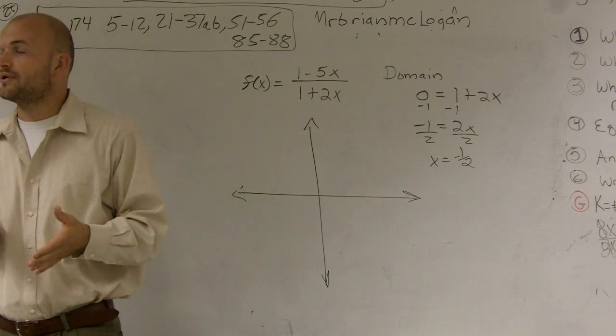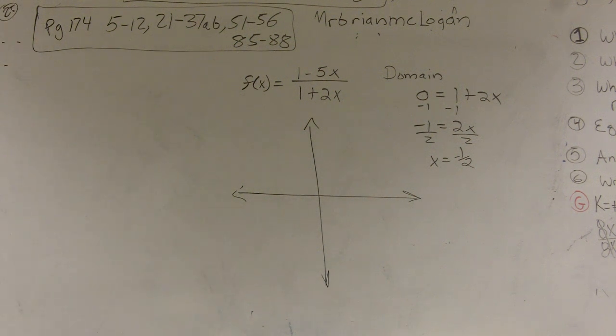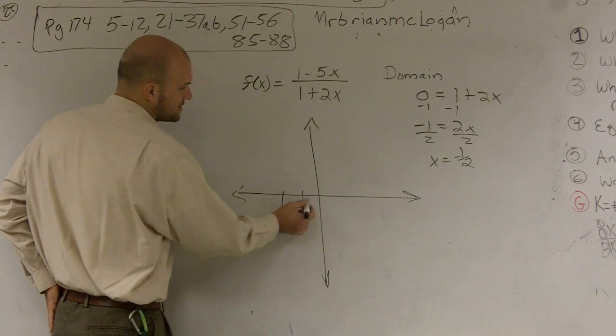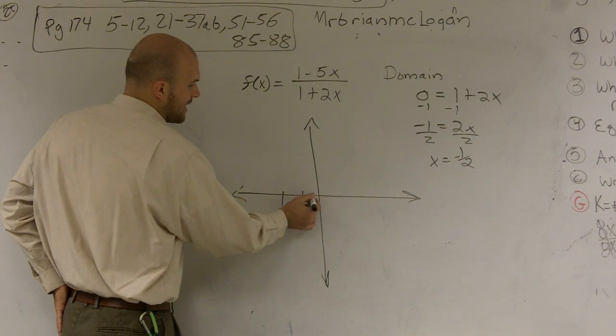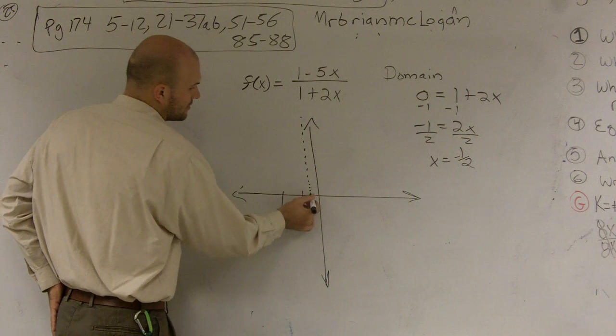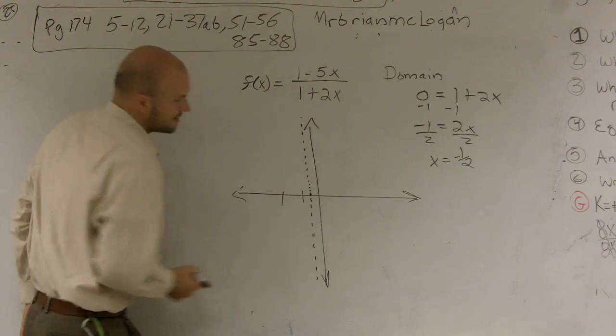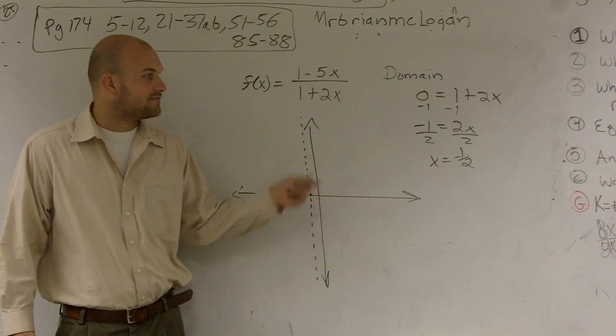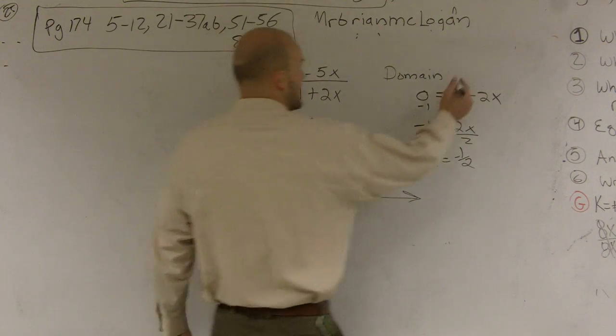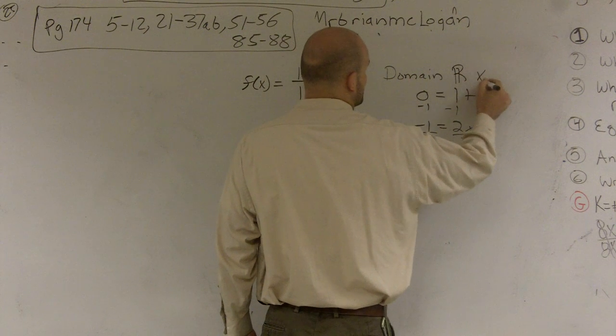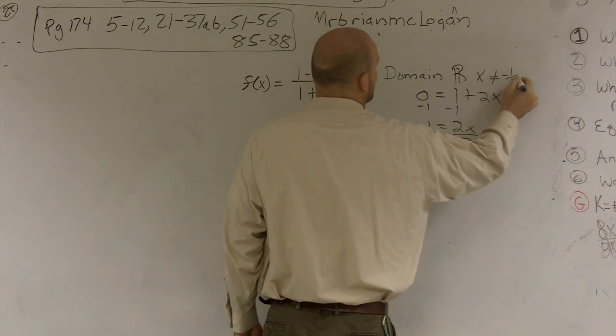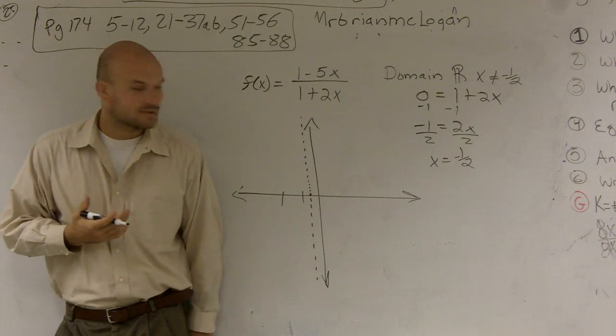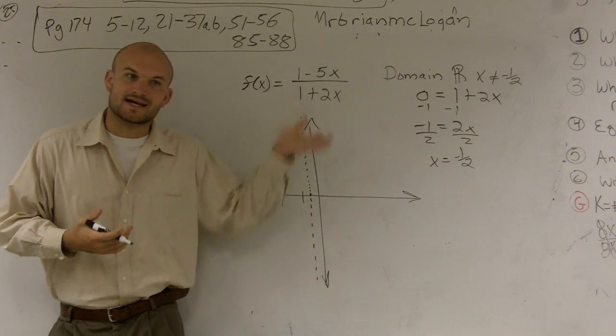You cannot put in negative 1 half and get an output because you can't divide by zero. So therefore, what we have is what we call an asymptote. And if I have, like, let's say negative 1 and 2, so therefore, at this point negative 1 half, I'm going to draw this vertical line here. I have no idea what my graph is going to look like, but I know at negative 1 half, that is not a part of my domain. So my domain is going to be all real numbers except x cannot equal negative 1 half. So to graphically represent that, what we do is we have what we call a vertical asymptote. So you have this dotted line.